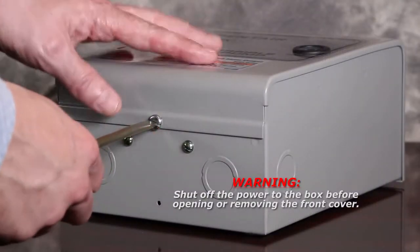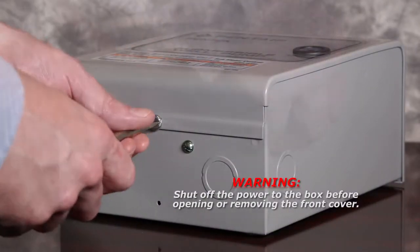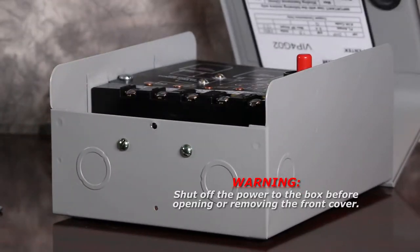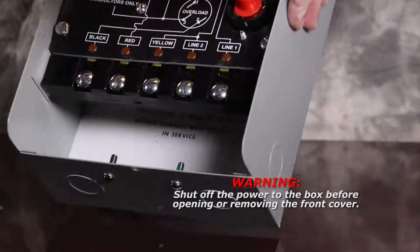With the removal of a single screw, the front cover of the Pentair VIP Pro Series Control Box comes off easily. The box is completely functional with the cover detached for easy in-field troubleshooting.